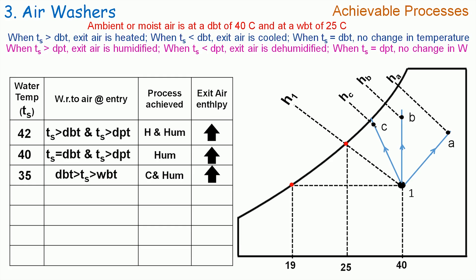Let us now make the spray water temperature to be 25°C. Here TS is less than the dry bulb temperature, hence air is cooled. And TS is greater than dew point temperature, hence the air is humidified. Therefore, the achievable process by the air washer is cooling and humidification. But please note that in this case TS is equal to wet bulb temperature. If we plot it on the psychrometric chart, then process 1D will be representing it. The enthalpy HD is equal to H1, hence exit air enthalpy remains constant during this process.